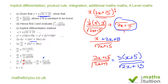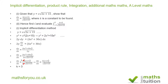So we get the same answer with both methods. It's up to you which method you use. With implicit differentiation the risk of making a mistake is reduced compared to the product rule, especially when a square root sign is involved. Either way, the value of k is 3.